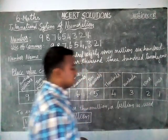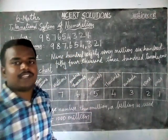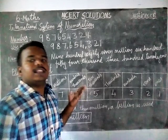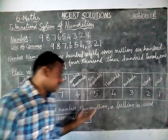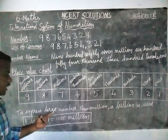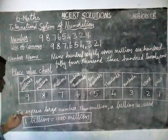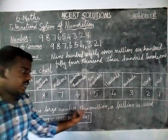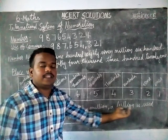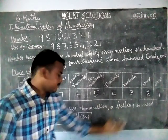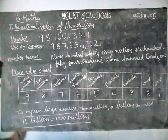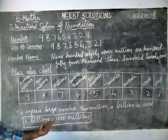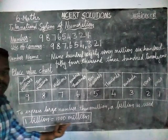But suppose you have a number larger than a million — there is the option of using a billion. To express a number larger than a million, a billion is used. One billion is equal to one thousand million.